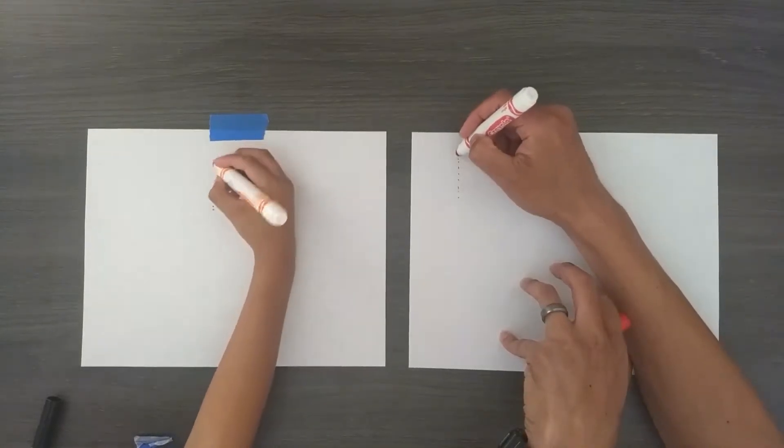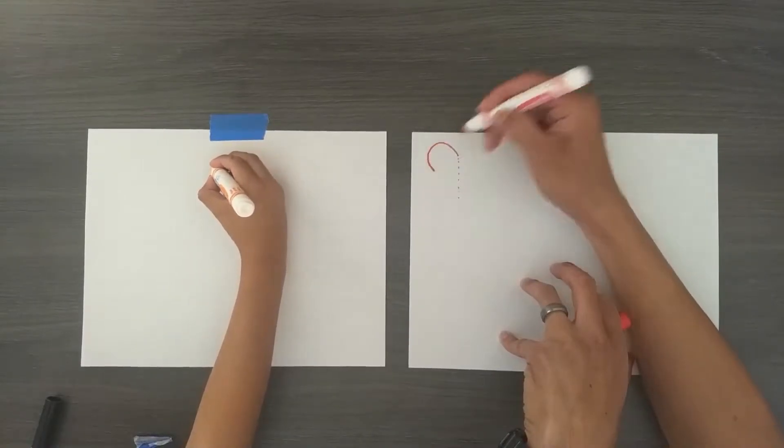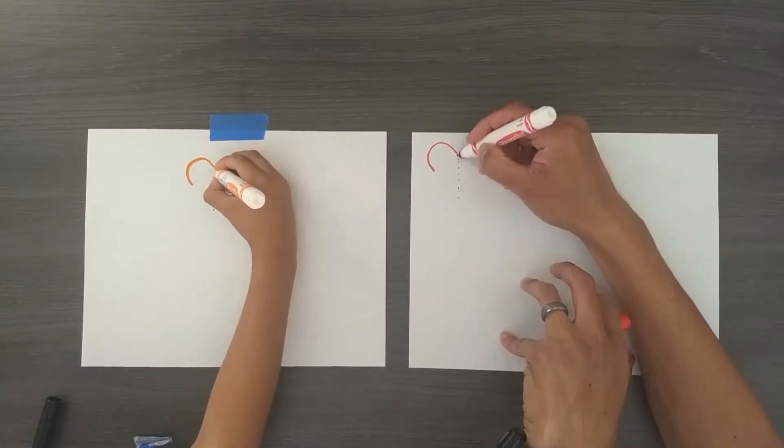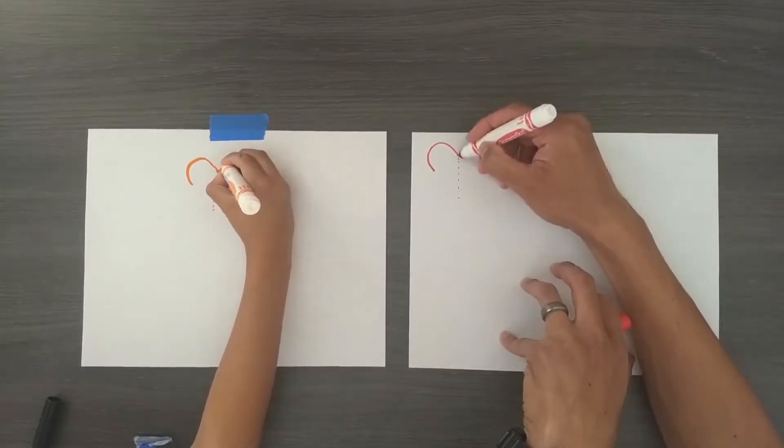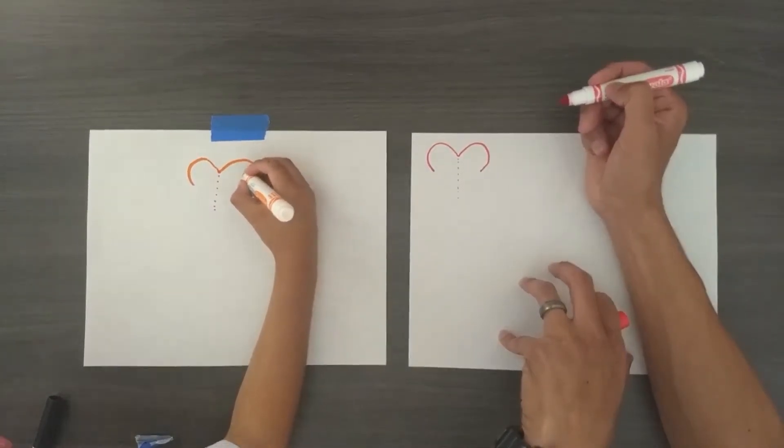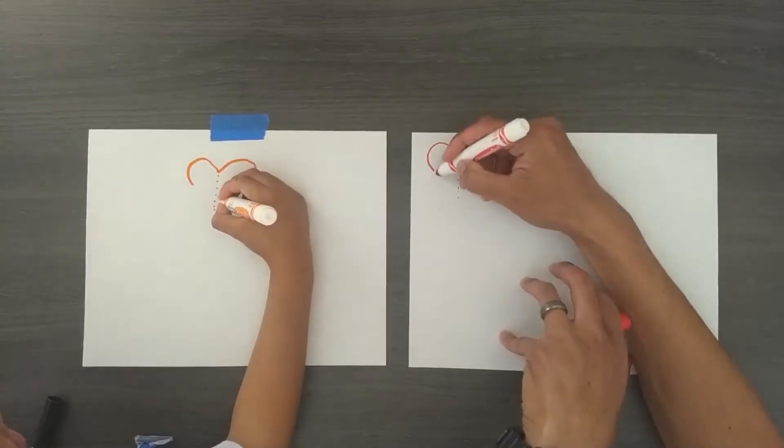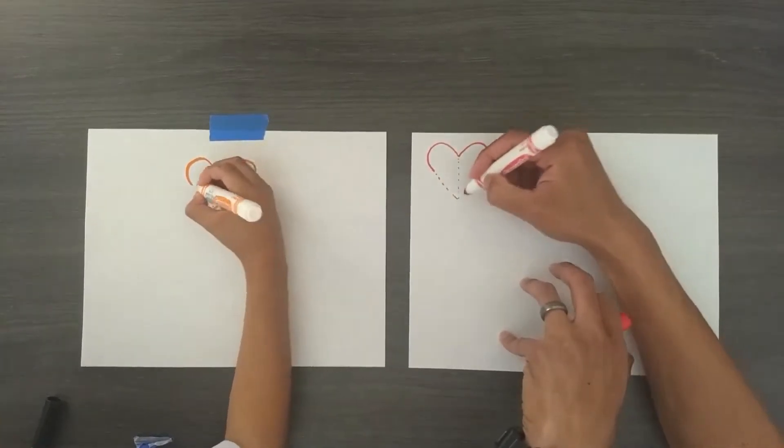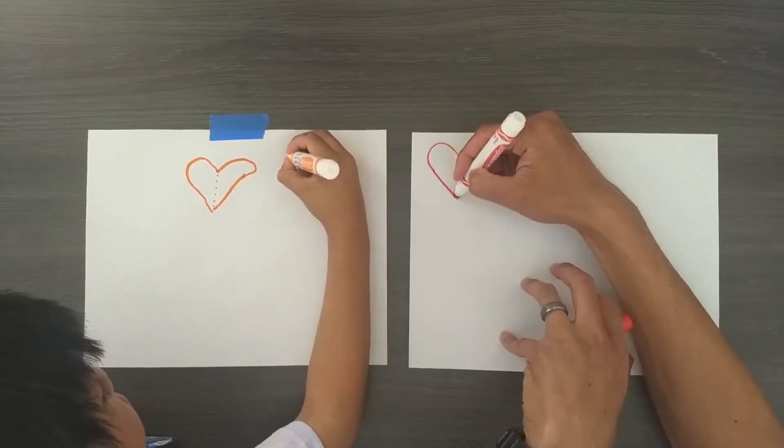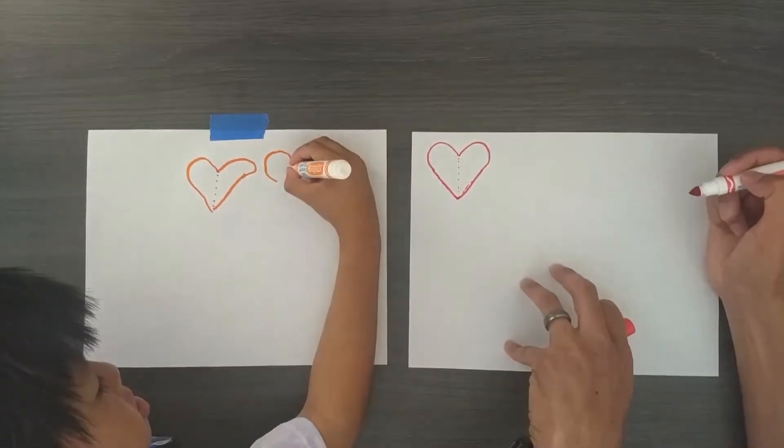And then the next thing I'm gonna do is I'm gonna do like a u-shape and then I'm gonna mirror it on the other side doing another u-shape. Okay, and then finally I'm gonna do a v right over here. Alright, that's how we do our heart.